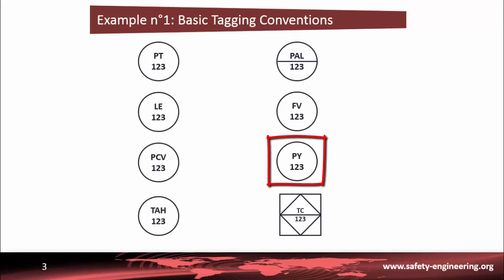PY means a converter or transducer, probably an I/P transducer close to the valve, no line inside the circle, to convert electrical signal to pneumatic signal. Finally, TC means a controller to regulate the temperature. This controller is a programmable logic controller, a PLC, because the symbol is a diamond within the square. This PLC is located on the main control panel.